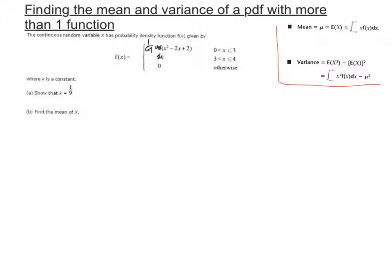I'm going to change that k to a ninth and make this 3k. Three times a ninth makes this 3 over 9. We're going to use the function as if we've already found k, and we're going to find the mean of x and also the variance of x.